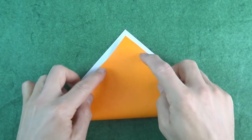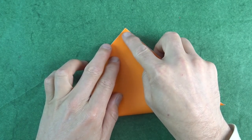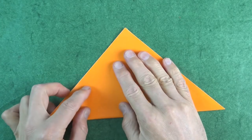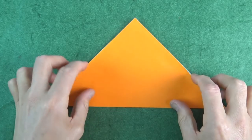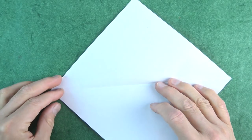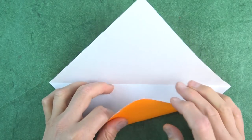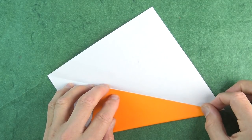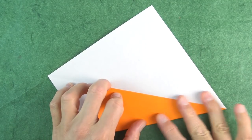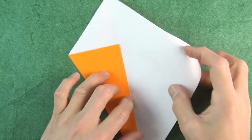All right, so let's begin with white side up, and fold diagonally in half. Try to make really precise folds, and crease sharply. Now, unfold, and fold this edge to the crease.